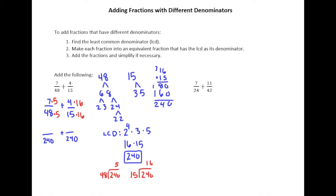And so, now, let's see. 7 times 5 is 35. 4 times 16 is 64. And so, then we just need to add those together. It looks like I've got 99 over 240.